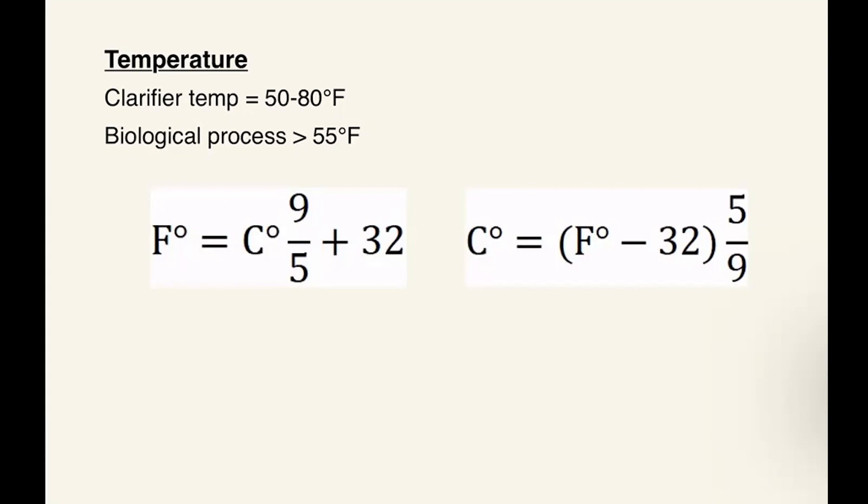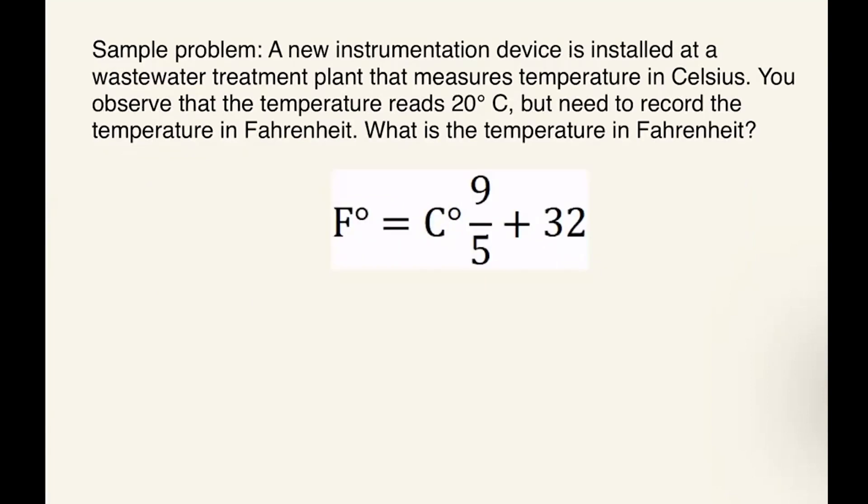The two formulas we can use are converting from Celsius to Fahrenheit, where you multiply Celsius times 9/5 and add 32 degrees, and you can also convert back to Celsius from Fahrenheit by subtracting 32 degrees from Fahrenheit and multiplying by 5/9. This is important because sometimes you might get a temperature in Celsius or Fahrenheit and have to be able to either understand it in the other one or report it as the other.